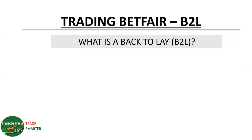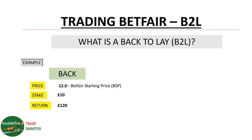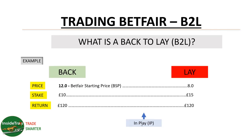With back to lay on a horse, the first thing is the back bit. We go to a horse and see its price is 12 - that's the Betfair starting price. We put a stake of £10 on it. Our return at 12 is 11 to 1, giving a return of £120 because you get your stake back. That's your back bet. You then let it go in play and work out what money you want to make on the lay bet. I recommend aiming for a 50% return - so on £10 I want to make a profit of £5.